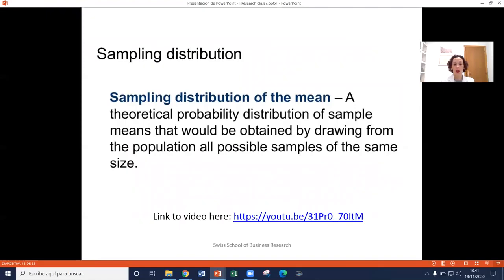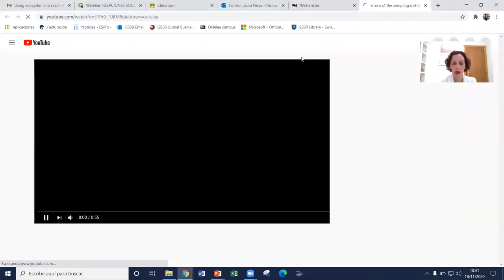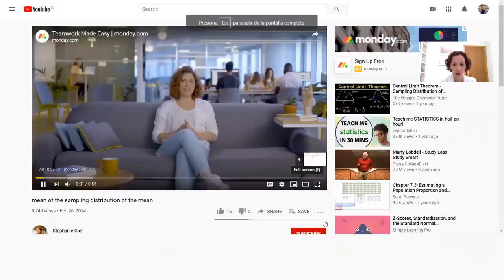And this is what we consider normal distribution. If you adjust the scales, it's exactly the same shape. This is what we call sampling distribution of the mean. It's a theoretical probability distribution obtained from drawing the population of all possible samples of the same size. I know that sounds like gibberish, so let me open up this YouTube video for you, which is going to be a lot easier to understand.